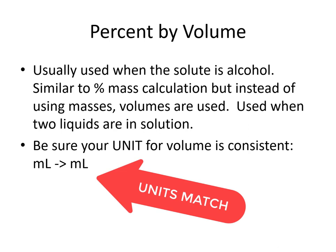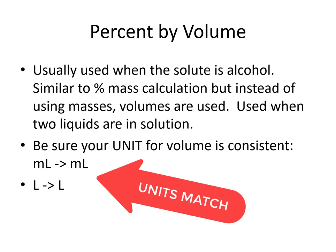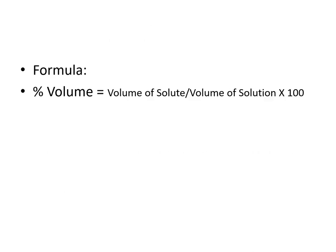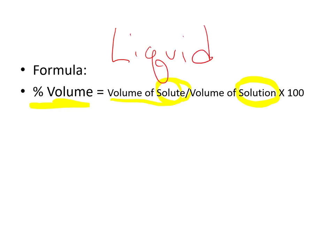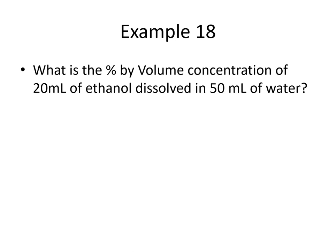We always want to make sure that our unit for volume is consistent — milliliters have to be working with milliliters, liters with liters. Our formula is: percent by volume equals the volume of your solute divided by the volume of your solution, multiplied by 100. Notice it's the volume of the solution, not the volume of the solvent, because in this instance everything is a liquid. The solute is usually the component present in the lesser amount.